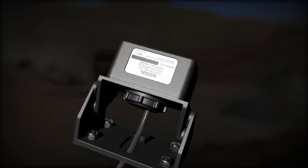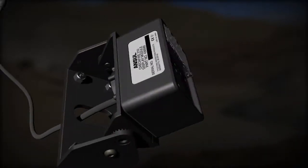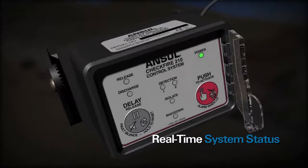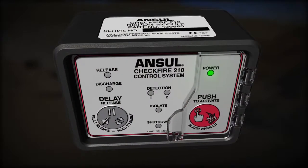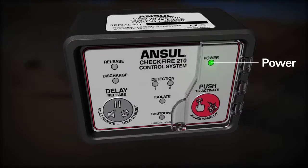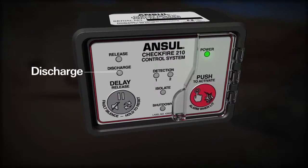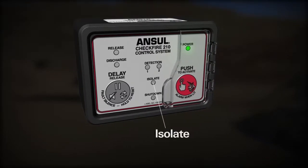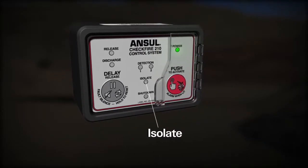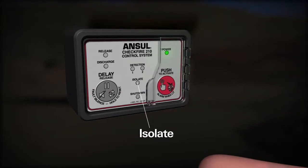It communicates with the interface control module to provide continuous, real-time system status. LED indicators provide notification of system status relating to power, release, detection, discharge, and shutdown. The isolate LED provides notification when the system is placed in isolate mode for maintenance.